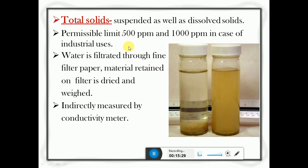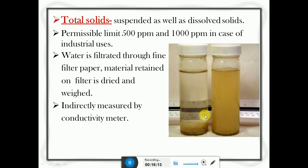Total solids consist of suspended as well as dissolved solids. The permissible limit for total solids is 500 ppm and 1000 ppm in case of industrial uses. Water is filtered through fine filter paper; whatever material is retained on the filter paper is dried and weighed to know the dissolved solids. It is also measured indirectly by a conductivity meter. In water samples with more solids, the suspended and dissolved impurities make water appear turbid, but with addition of coagulants or chemicals the solids can be precipitated to yield clear water.